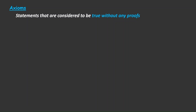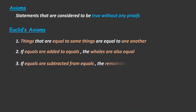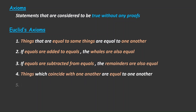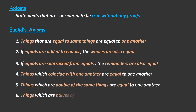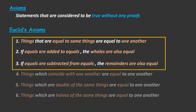Now, some of the axioms that Euclid gave — in this class, we'll be discussing the first three axioms. So let's take the first axiom and use the help of an example.